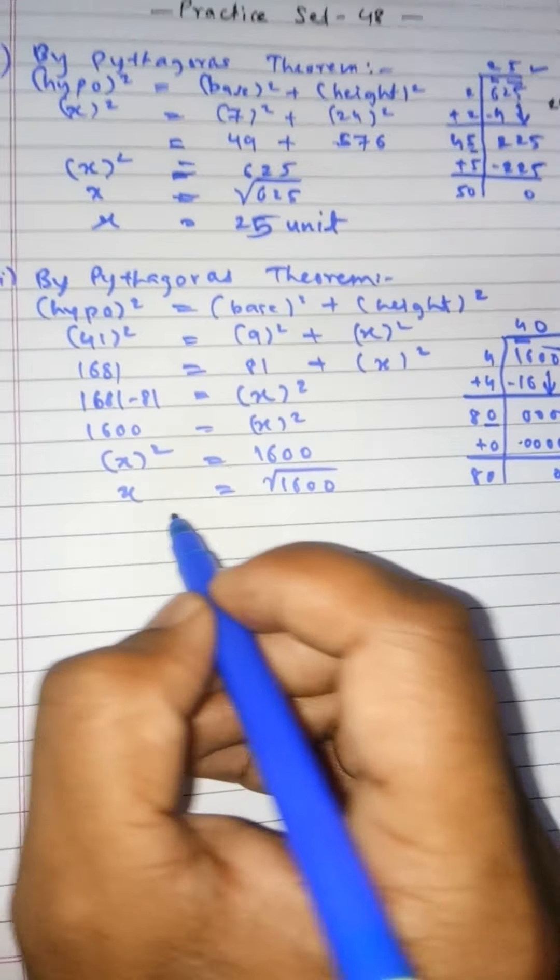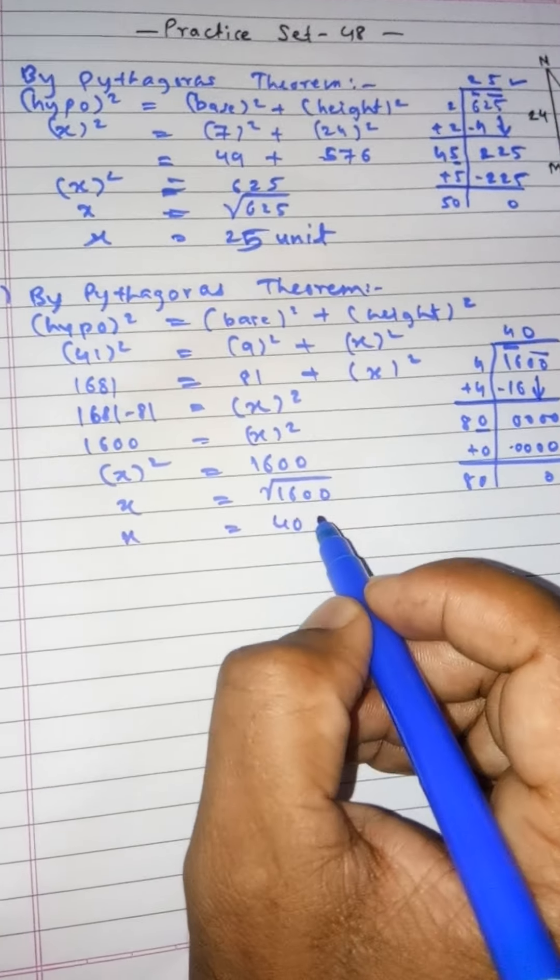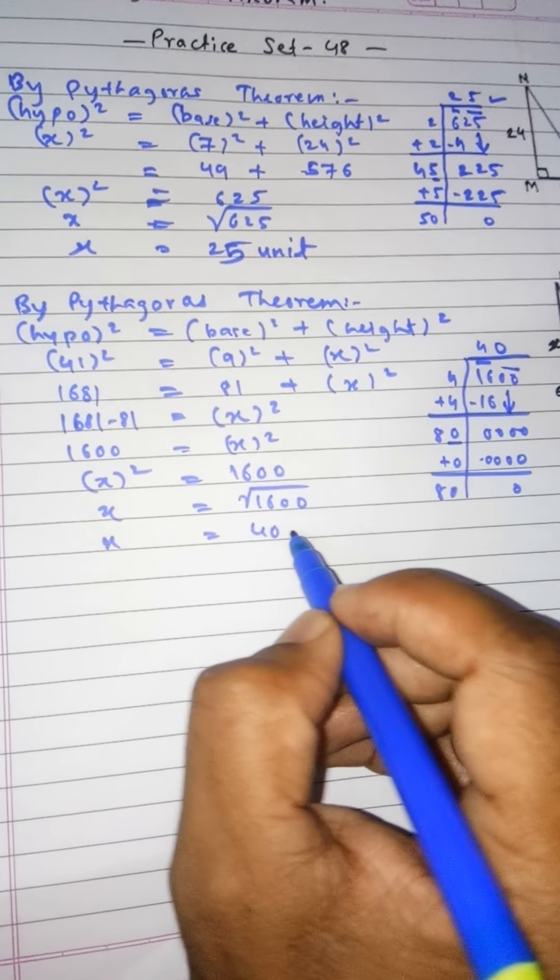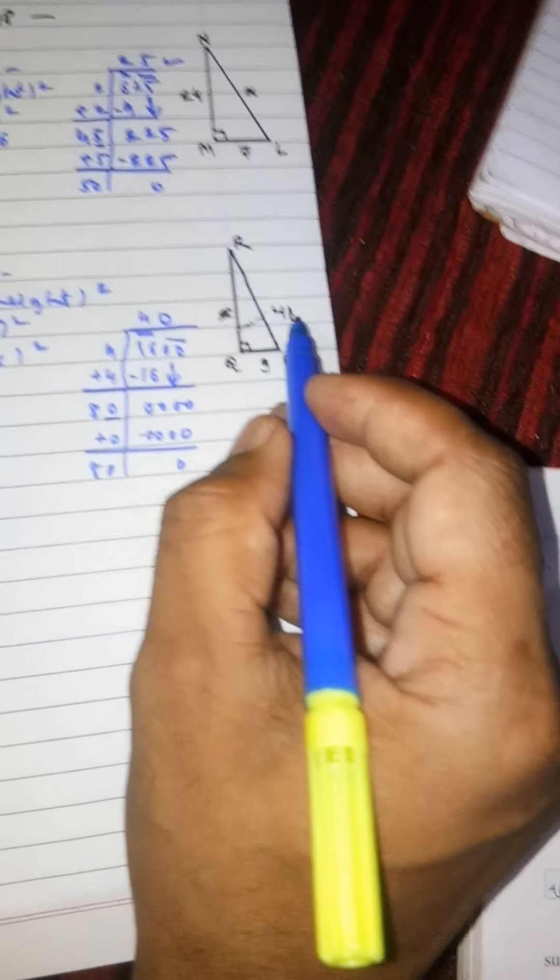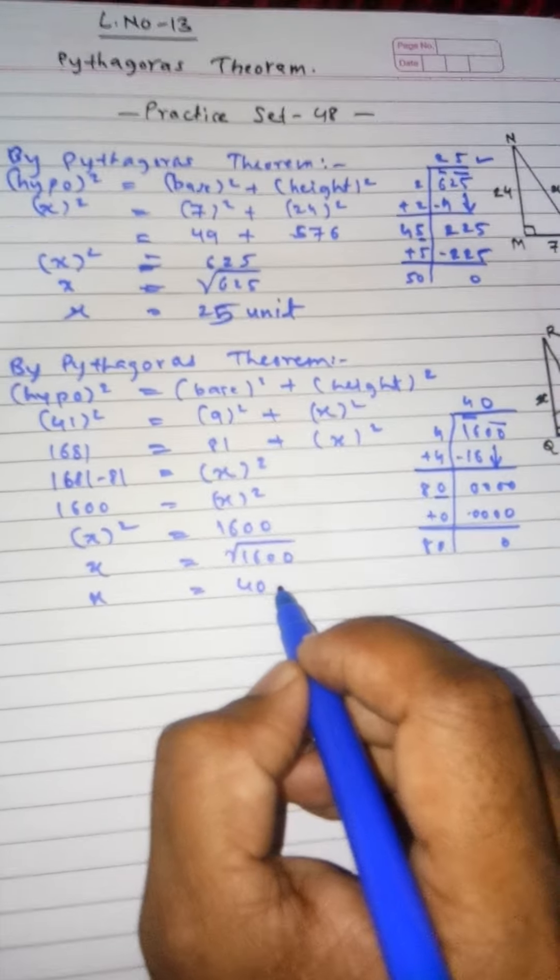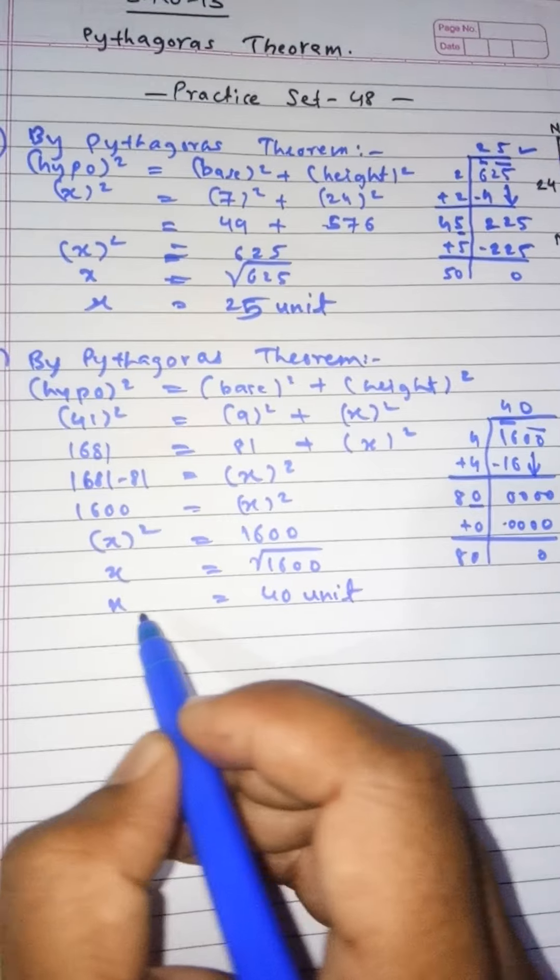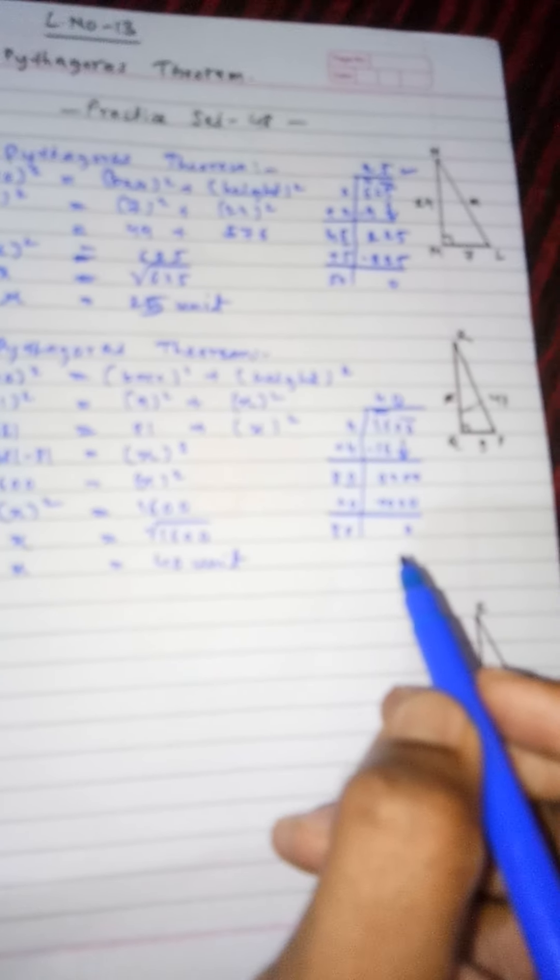Finally x is equals to 40, and please do not forget students to write the unit. As no unit is given to us, only 9 and 41 is there, no unit is given to us, so write here unit. So finally the value of x is equals to 40 units. Hope so you have understood the answer.